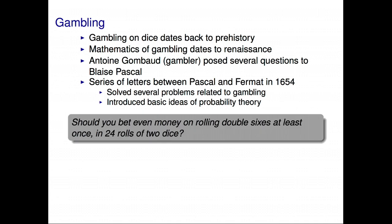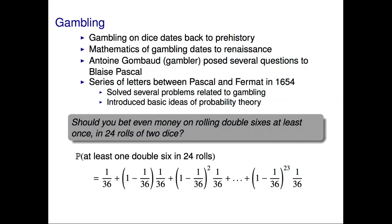Here's an example of an actual problem discussed by Fermat and Pascal in their letters. Should you bet even money on rolling double sixes at least once in 24 rolls of two dice? Even money here means that if you bet $1 and you win, you get $2 back. To answer this problem is now high school mathematics, but prior to Fermat and Pascal, there was no mathematical framework with which to think about such problems. We now think about it as follows. Consider all the ways to possibly roll a double six in 24 attempts. You could roll it on the first attempt. That happens with probability 1/6 times 1/6, which is 1/36.